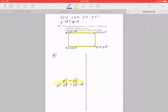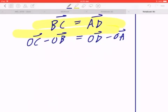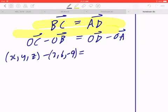And if you think about BC, by definition, that's going to be OC minus OB, and likewise, AD is going to be OD minus OA. And the given, OC is going to be (X, Y, Z), which is what we're trying to find, and OB is given to be (2, 6, -9). On the right-hand side, OD is given to be (3, Q, 8). OA is given to be (-1, 2, 3).